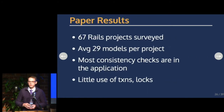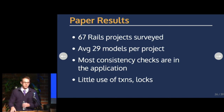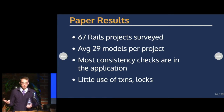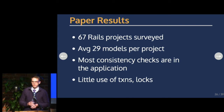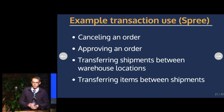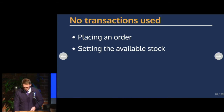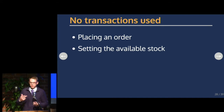Back to the paper: they looked at 67 different open source Rails projects, 30 models per project. Most of the consistency checks — like uniqueness, not null constraints, validation like giving it an integer when it expects an integer — were in the application. Foreign keys were also in the application in Rails, with little use of traditional concurrency control mechanisms like transactions or locking. Here's an example application — Spree, an open source shopping cart. They use six transactions in total across the entire project — canceling an order, approving an order — but there were no transactions on placing an order or setting the available stock.